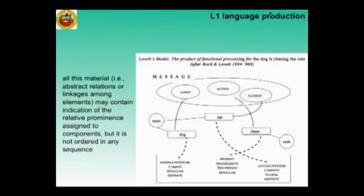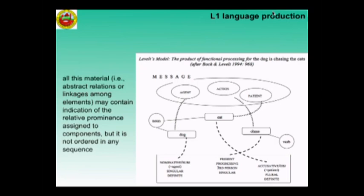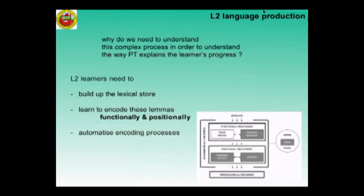When all this material comes out of the functional processing, it may contain indications of prominence but it is not organized in any linear order. In order to achieve that, it has to undergo the process of positional constituent assembly and inflection. Constituent assembly fixes the linear order and captures the dependencies amongst syntactic functions.